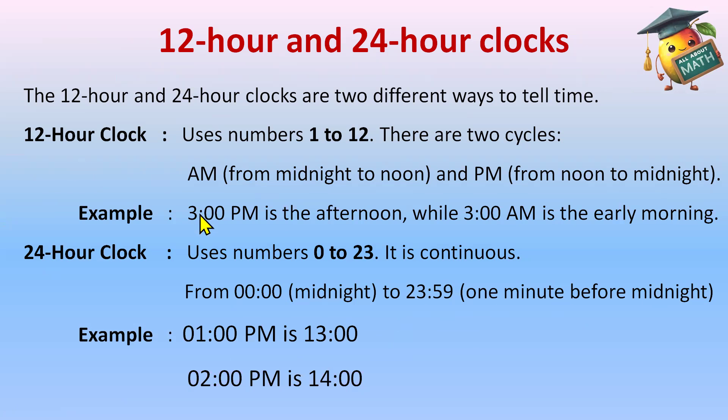So basically 12 hour clock has P.M. and A.M., and 24 hour clock we have numbers from 0 to 23.